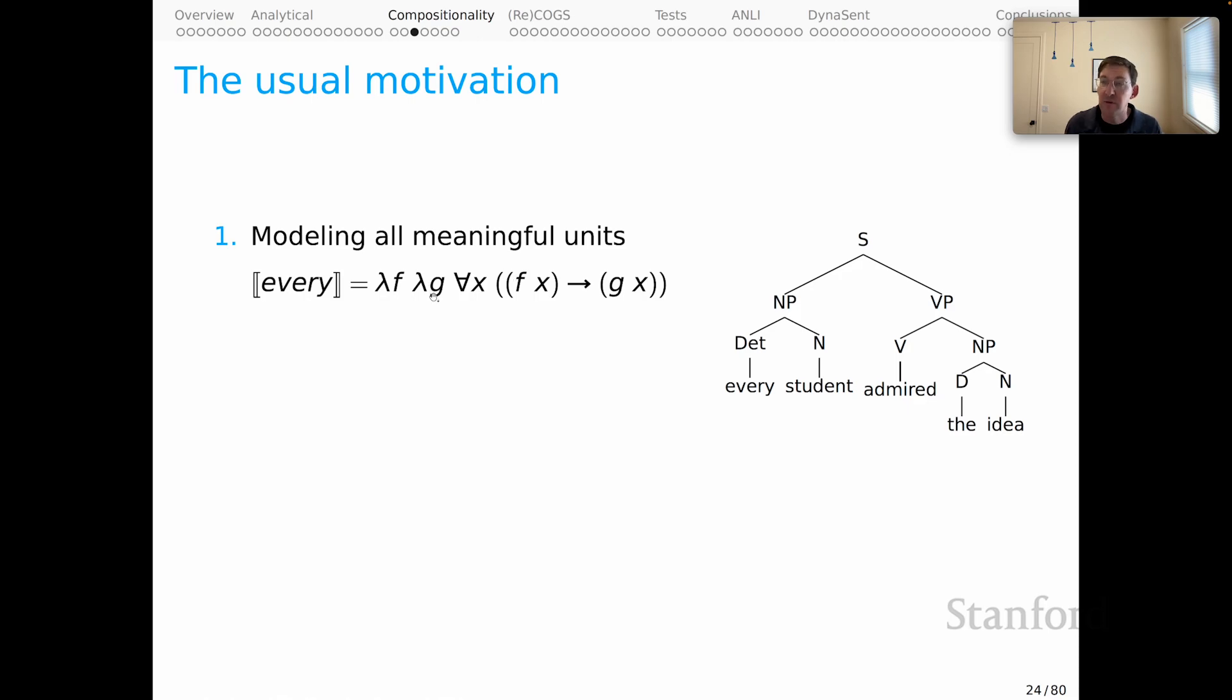that when combined with the meaning of this verb phrase, finally gives us a meaning for this S node up here. And it's something like universal quantification where, in this case, if something is a student, then it has the property of admiring the idea. That would be the fundamental claim of the sentence. And you can see there that that claim was kind of driven by every down there in this determiner position inside the subject. So a great deal of abstraction, but that is a technique for giving meanings to all the meaningful units, which would be a consequence of adhering to compositionality.